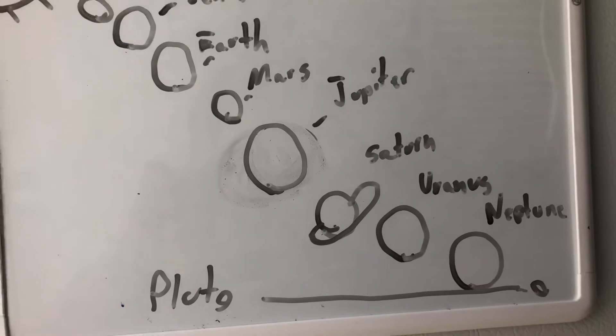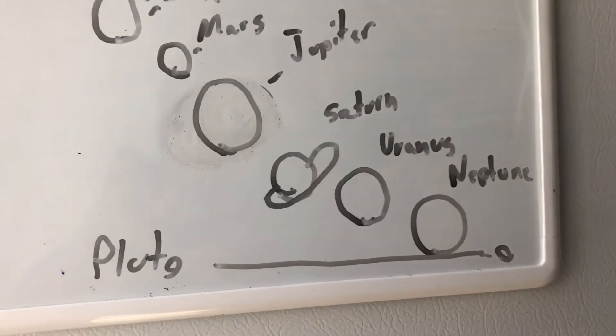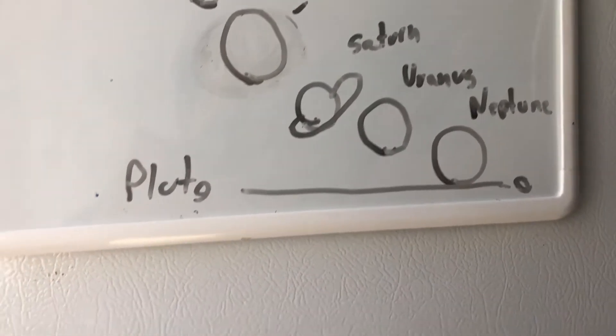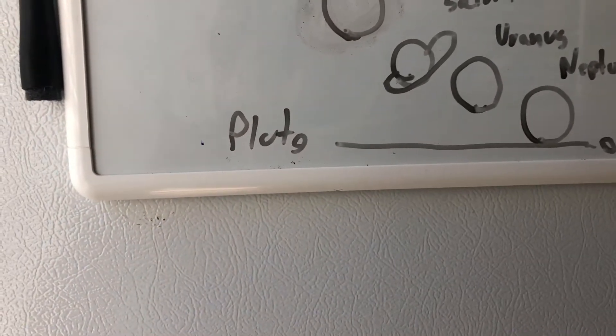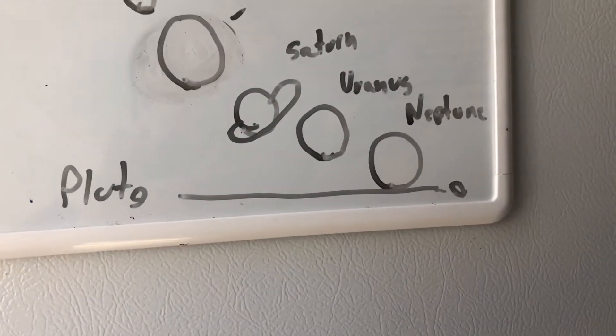And then the rest of the group did Jupiter, Saturn, and we didn't do Uranus. So we had a little bit of a mix-up and we did Pluto and Neptune instead.